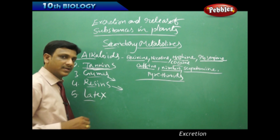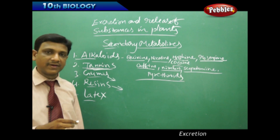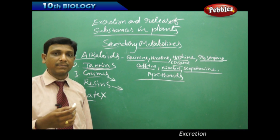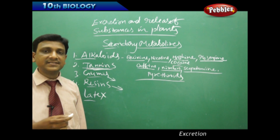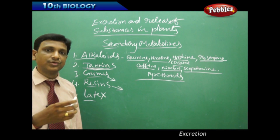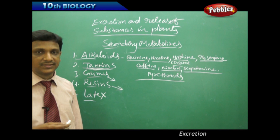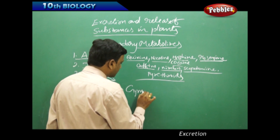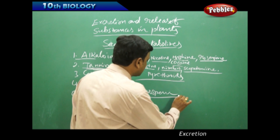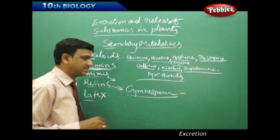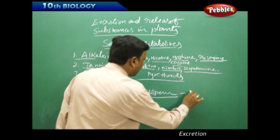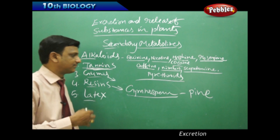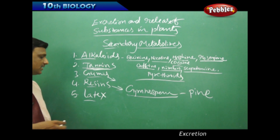Resins are obtained from gymnosperm plants like pine. Gymnosperms are naked-seeded plants. They have special resin passages through which resins are secreted and collected.